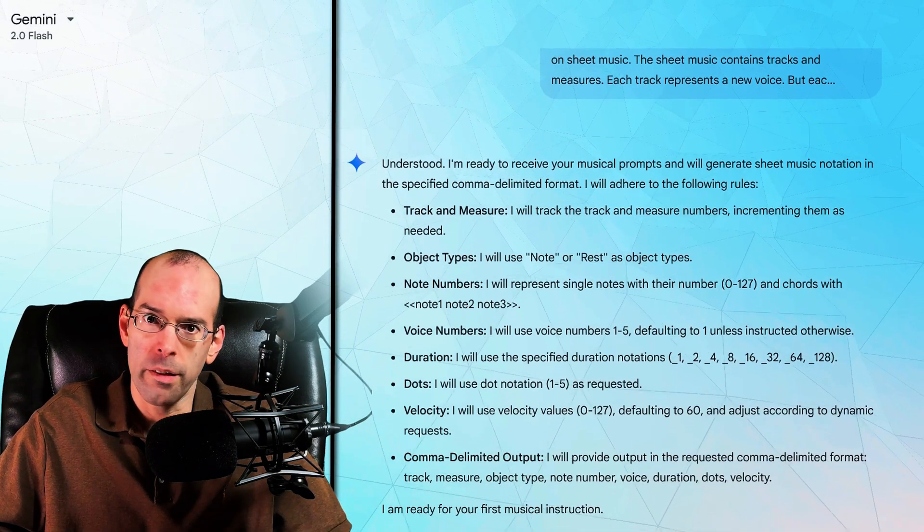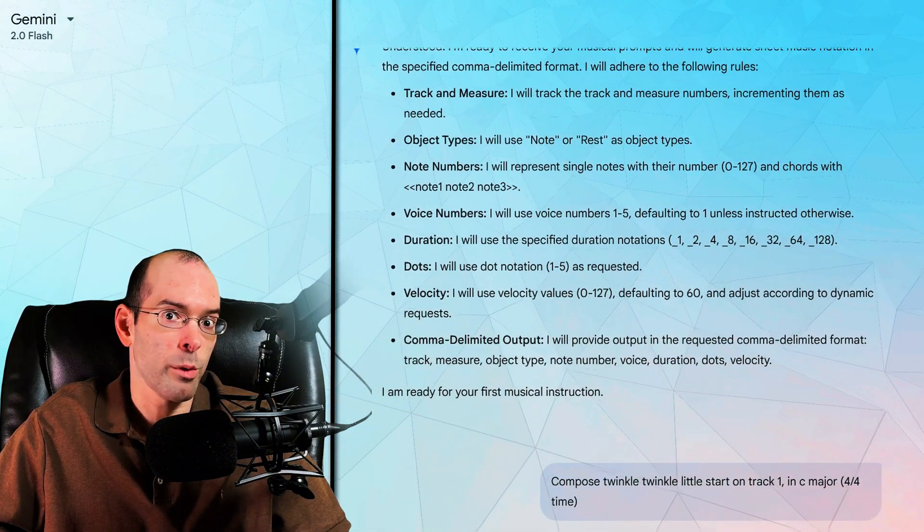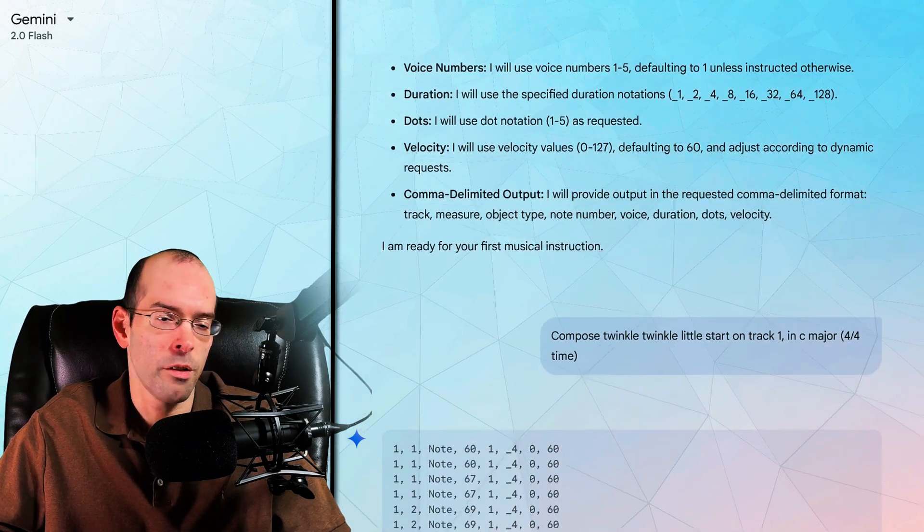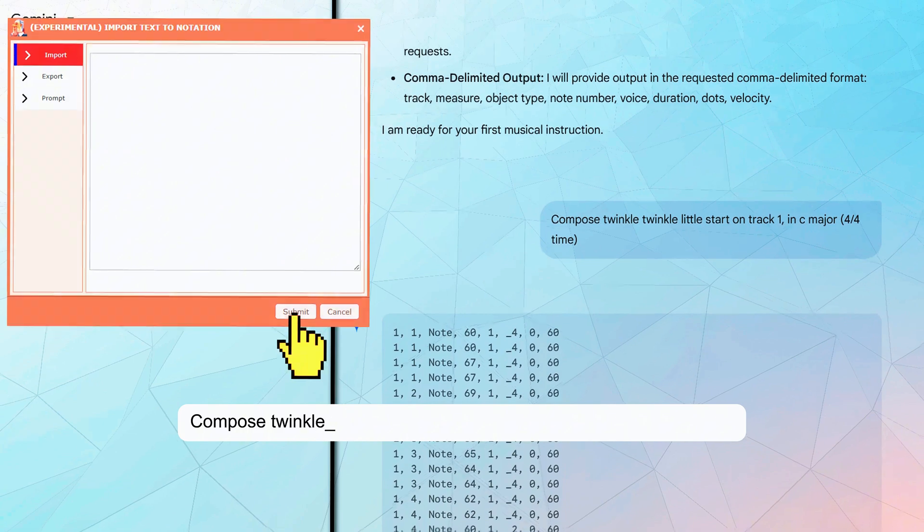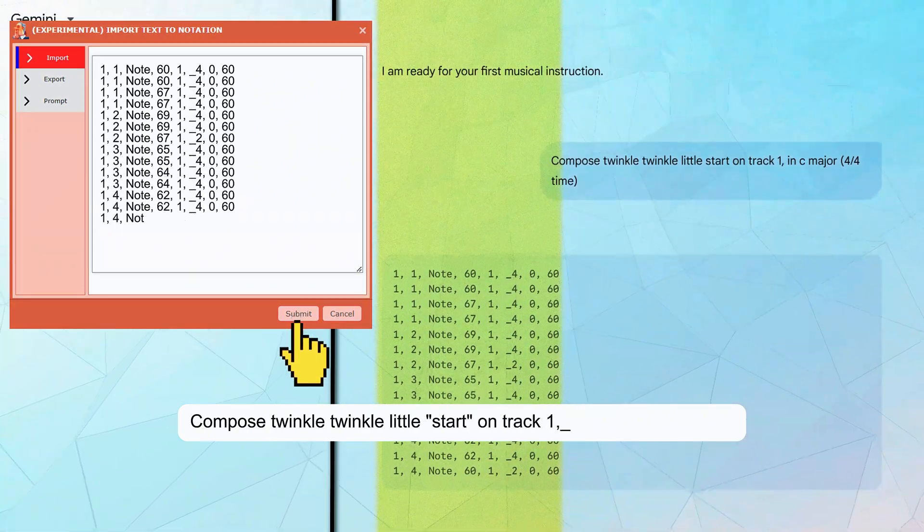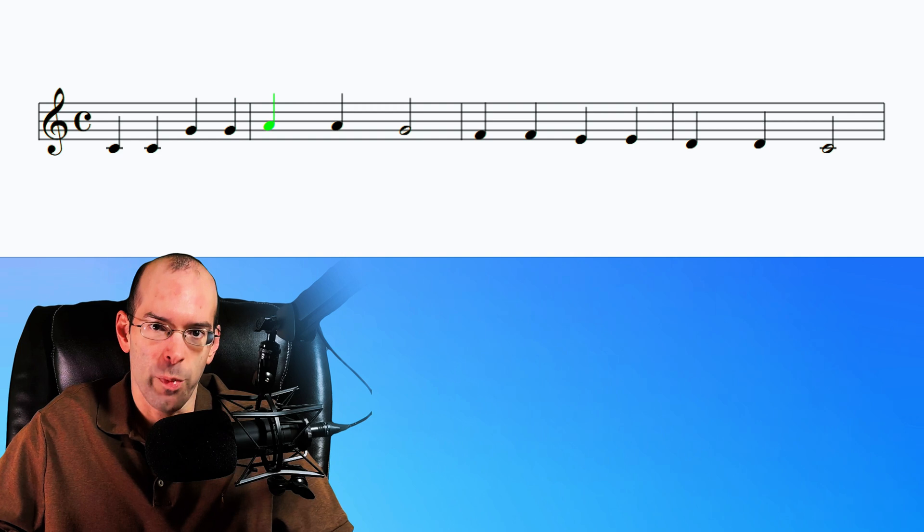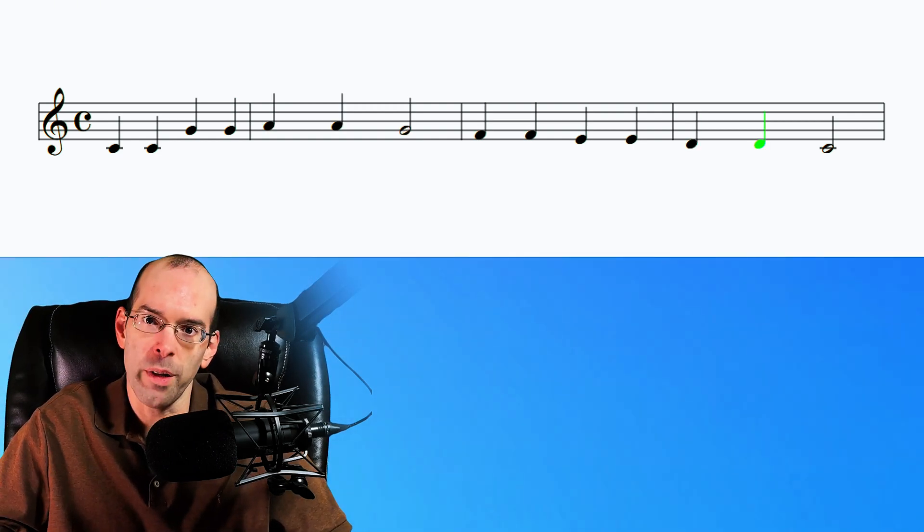Now, let's get to our second demo where I try to get the AI to compose Twinkle Twinkle Little Star in C minor. Keep in mind that I have to start with C major first, just for simplicity. So I asked the AI this. Compose Twinkle Twinkle Little Star on track 1 in C major in 4-4 time. So I even misspelled it, but it still got the melody perfectly fine. And I'm actually really impressed by this.